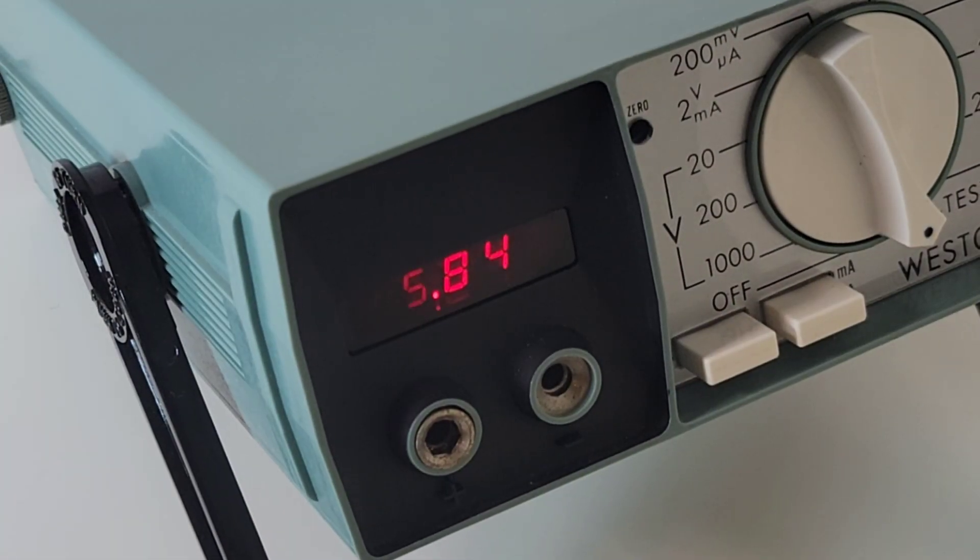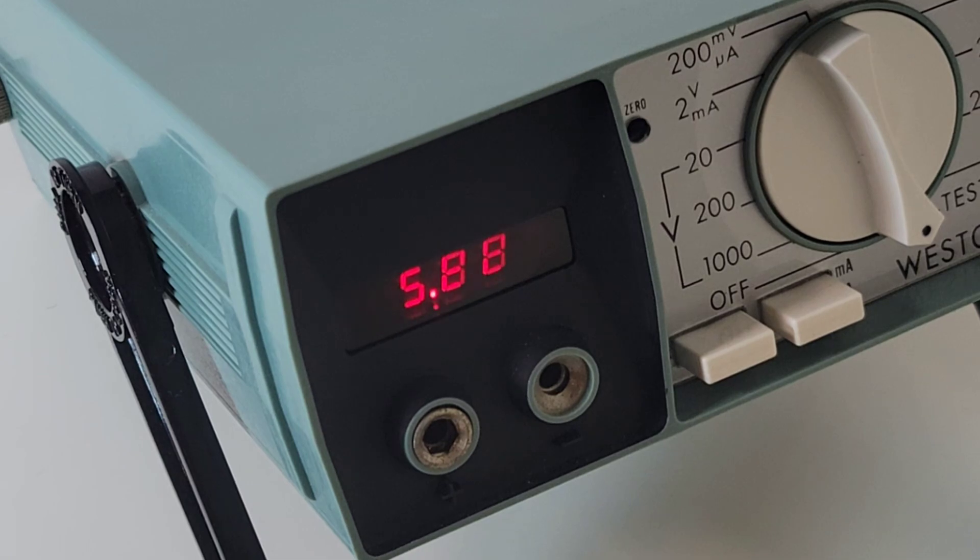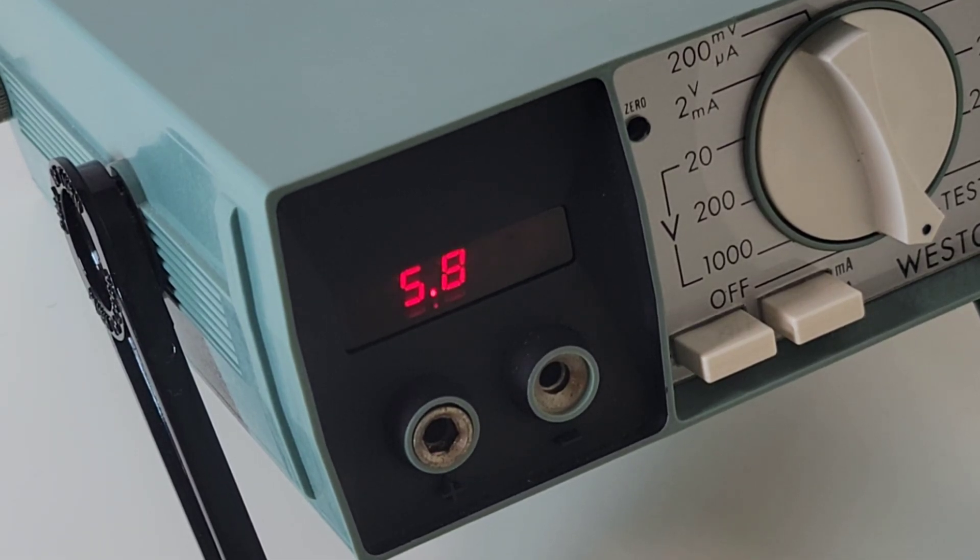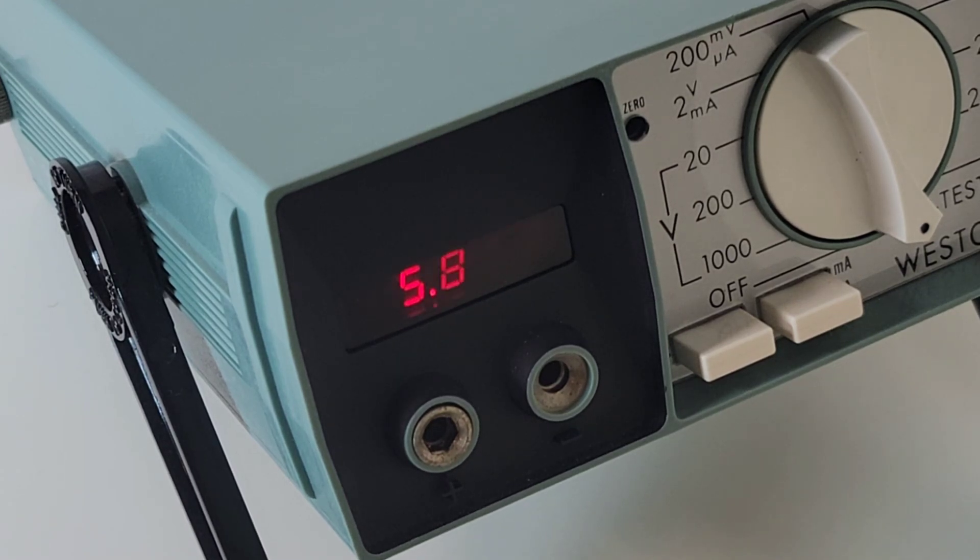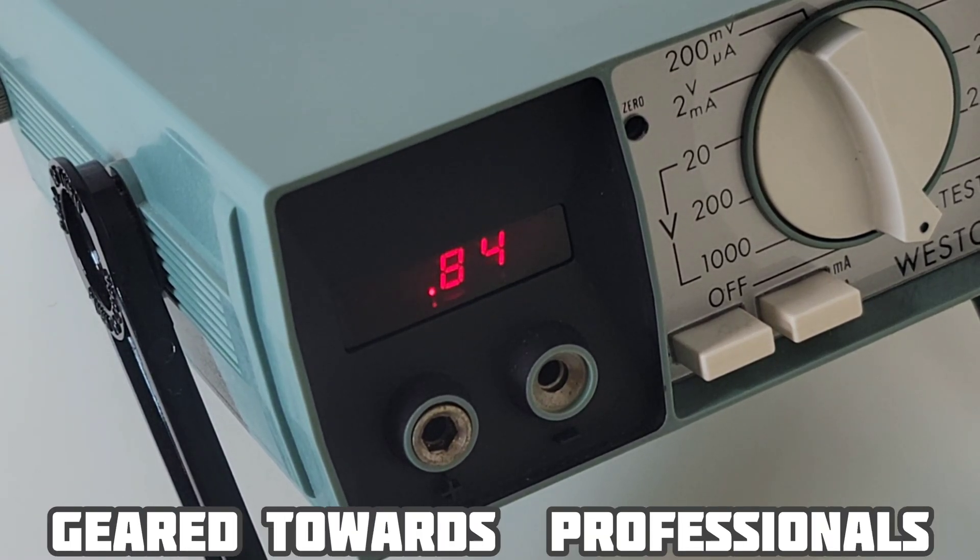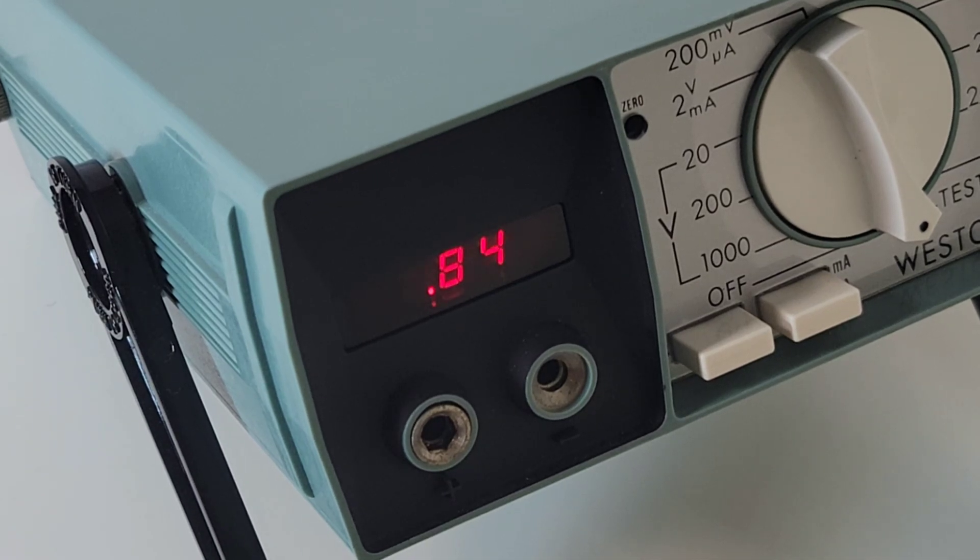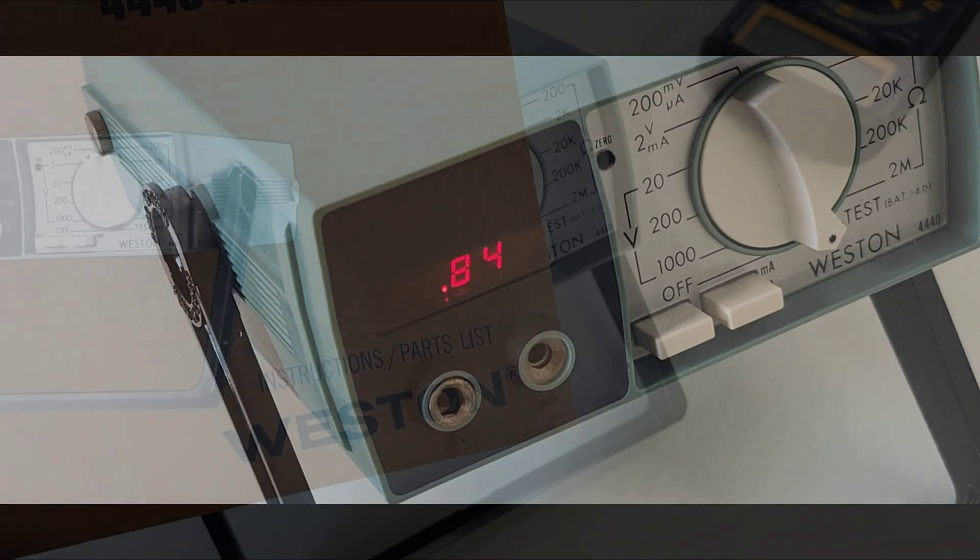Previous models as well that had the Nixie tube displays, all of them, including the 4440, extremely reliable. A quality they share with lots of portable meters of the era. So these things were not only built like tanks, but they were built to last as well.